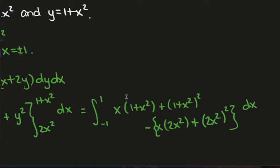And let's just use this space up here to simplify the integrand. So what do I have? I've got x plus x cubed plus 1 plus x squared squared is 1 plus 2x squared plus x to the 4. And now I'm going to minus, here we have 2x cubed, and here I get 4x to the 4.